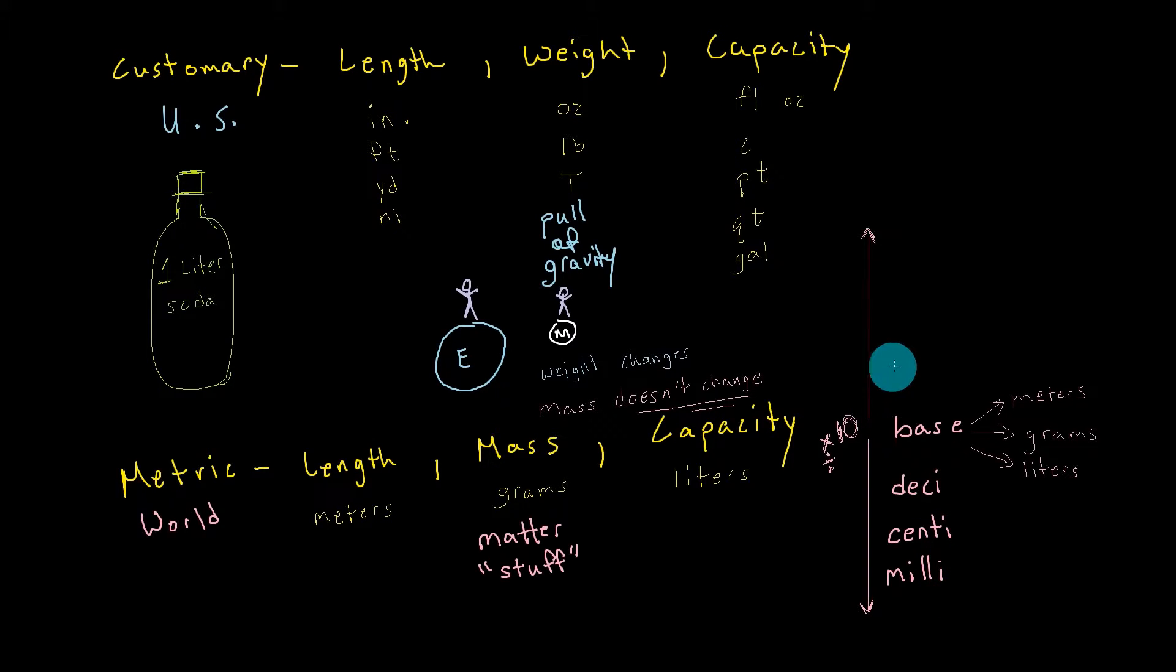This is good for the smaller units. For now, let's look in the other direction. I'd write deca for 10, hecto for 100, and kilo for thousand.